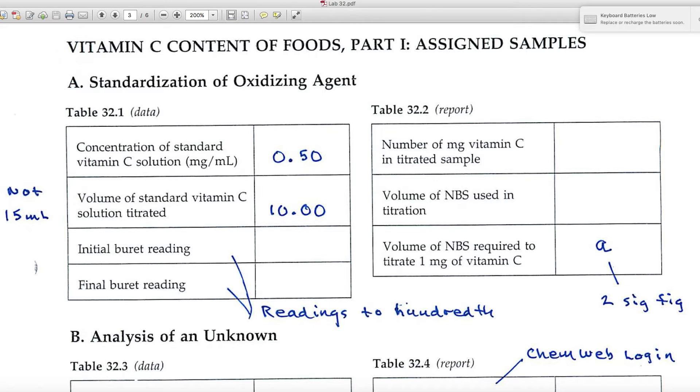The second critical number: the volume of standard vitamin C solution titrated. All the way through the experiment you use a pipette, a 10 milliliter pipette, and the pipette is accurate to the hundredth, so you'd want to record 10.00. Once in a while students record 15 milliliters for this blank, that's the amount of liquid that you begin with, but it's not the amount that you measure out.